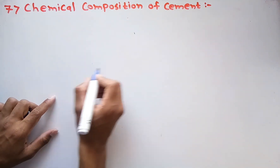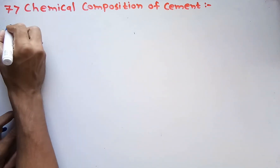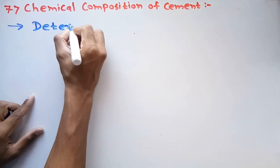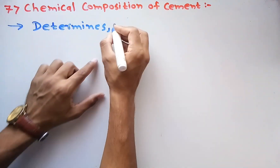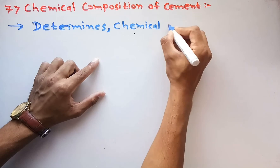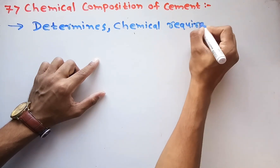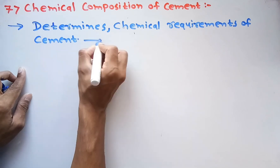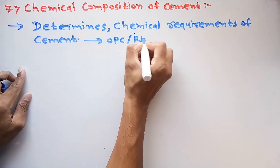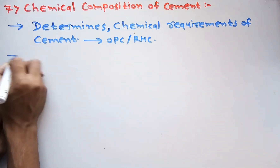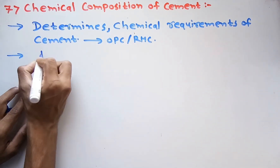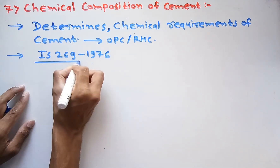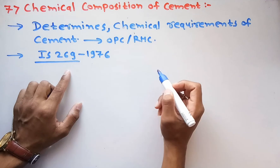First of all we will see what is the significance of this test. This test is used to determine the chemical requirements of cement. The cement may be OPC, RSC, or any other type. The IS code which is followed to perform the chemical composition test is IS 269, and it was first derived in 1976.